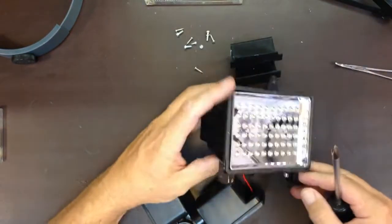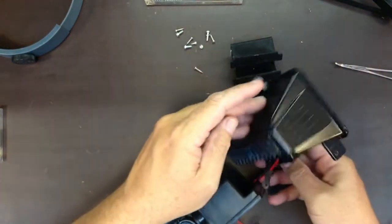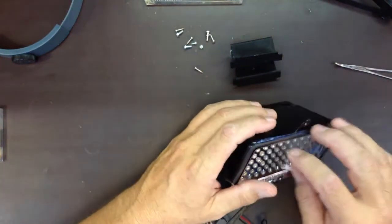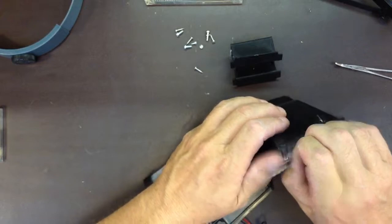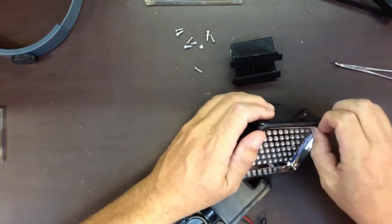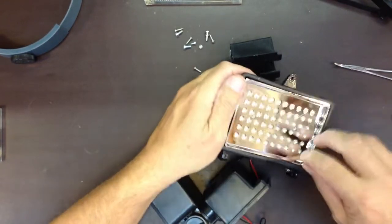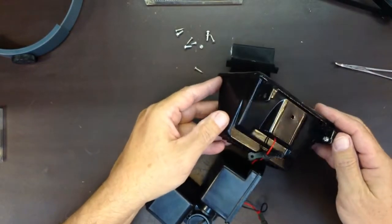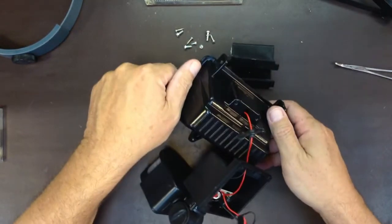Alrighty. Let's see. So I don't see anything left holding the LED in. That gasket's glued on. That's interesting. I don't see any more screws.